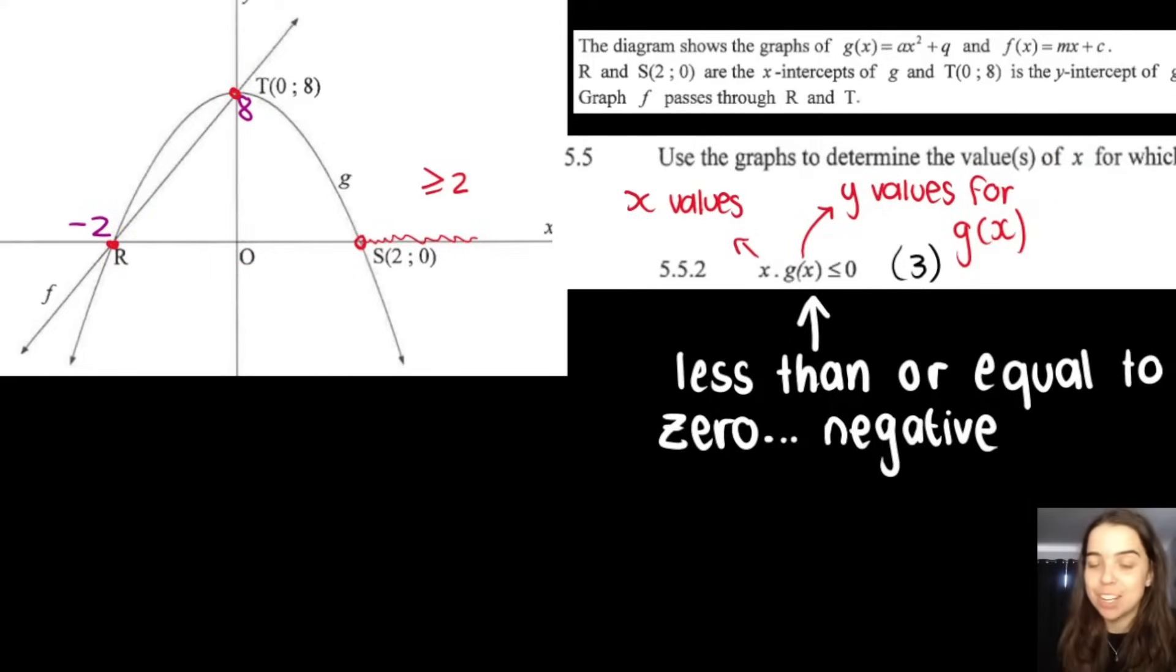Now this question is quite a challenging question, and it's an interpretation question. You really need to understand the wording and the notation. It says use the graphs to determine the value or values of x. So again, we're looking at x values for which x multiplied by g of x is less than or equal to zero. In other words, negative. If something's less than zero, it is a negative. Now I wrote here x refers to x values. G of x refers to the y values, the output, the output values for the graph g of x and g of x is our parabola.